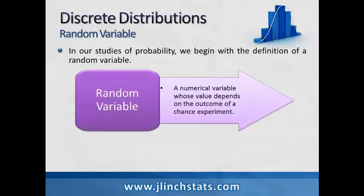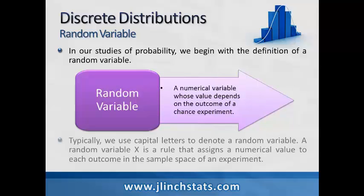A random variable is a numerical variable whose value depends on the outcome of a chance experiment, and a random variable can take on any or several of values. Typically we use letters to denote a random variable in probability. A random variable x is basically a rule that assigns a numerical value to each outcome in the sample space of an experiment.